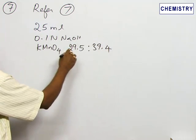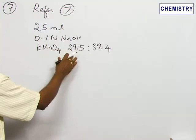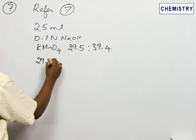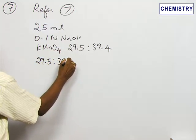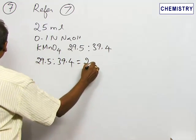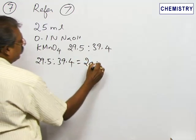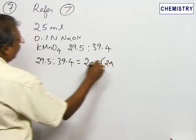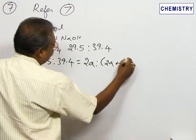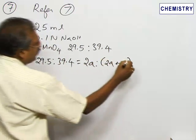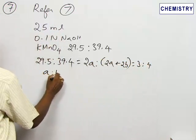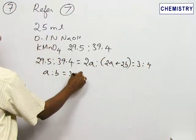This is also the ratio of neutralization power. 29.5 is to 39.4, that is also equal to 2a is to 2a plus 2b, because in the same ratio. This will give 3 is to 4, and therefore a is to b must be 3 is to 1.